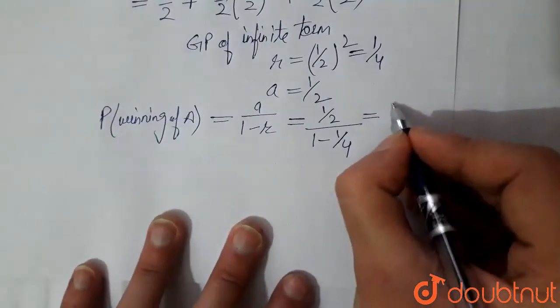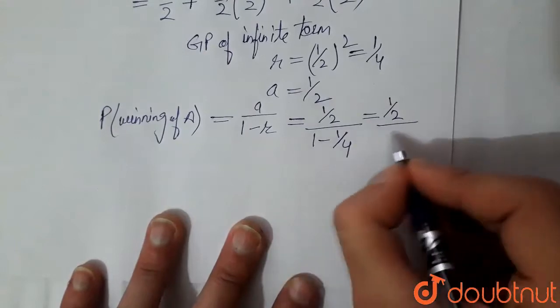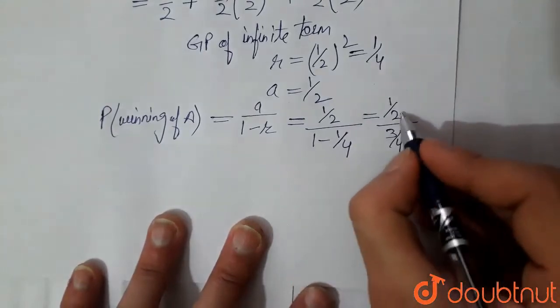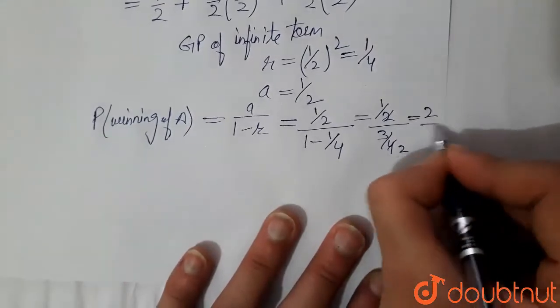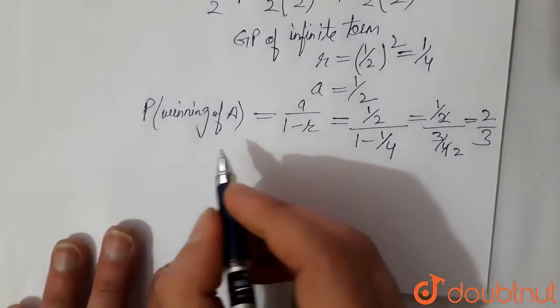So this becomes 1 by 2 divided by 3 by 4. 2 gets cancelled out. This becomes equal to 2 by 3. So 2 by 3 are chances of winning of A.